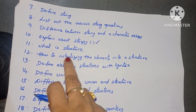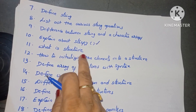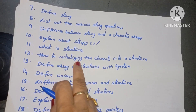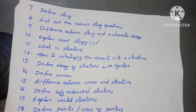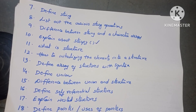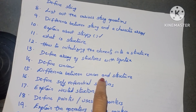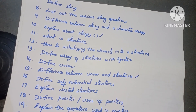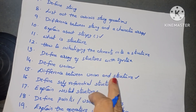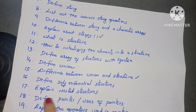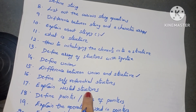Now the questions from structures: what is a structure? How to initialize the elements of a structure? Next: define array of structures with syntax — an important question. Next: define union, or what is union? Difference between structure and union — a very very important question, especially for SI type policy exams. Define self-referential structure — very important. And then explain nested structure — a structure within another structure is called a nested structure.